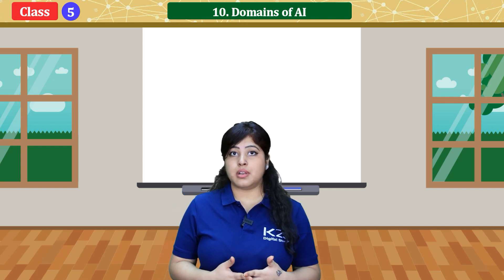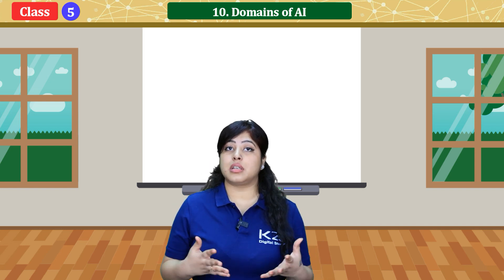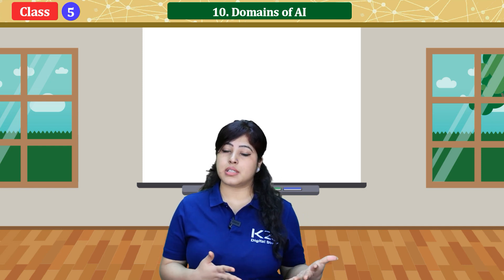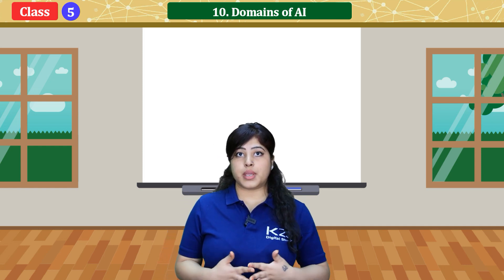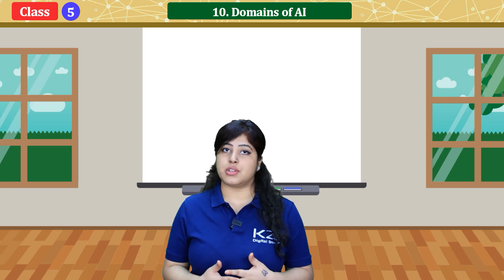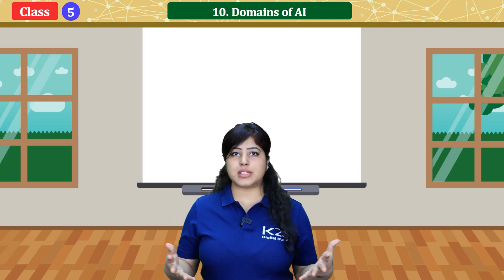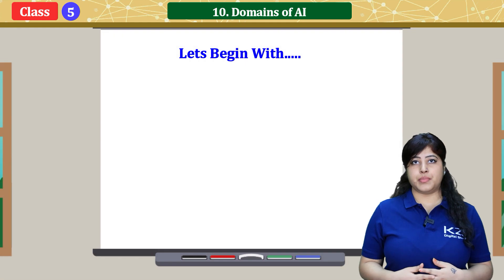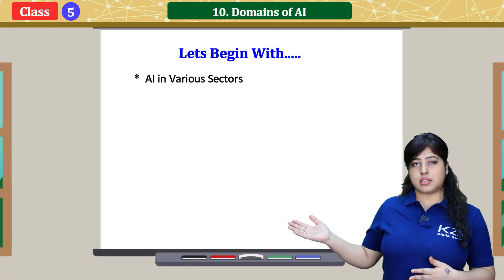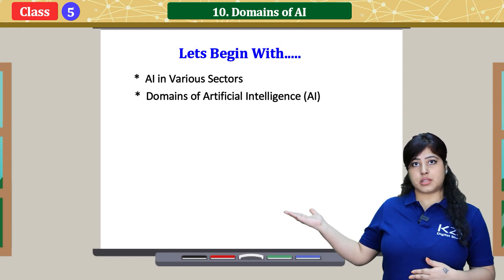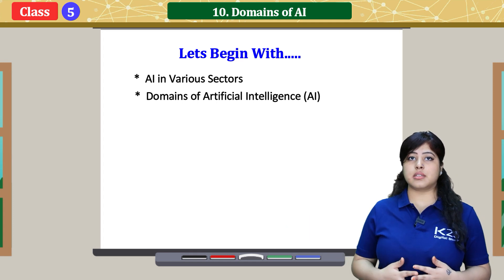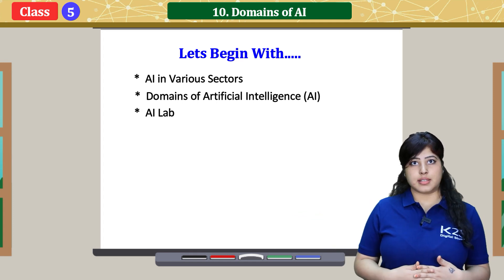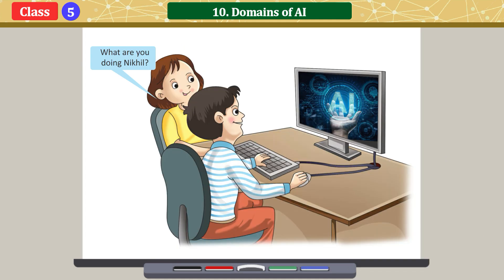In this chapter we'll also see certain domains of AI — Data Science, NLP, and CV, that is Computer Vision. So all this we'll learn in this chapter. Let's begin with AI in various sectors and domains of Artificial Intelligence.